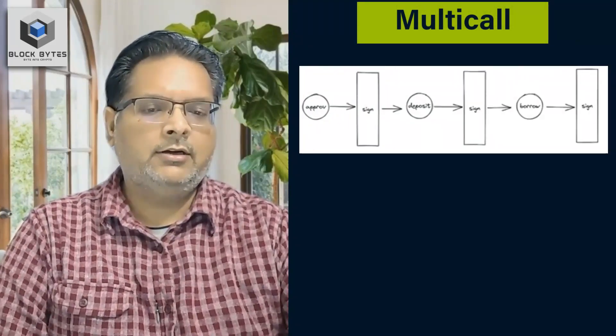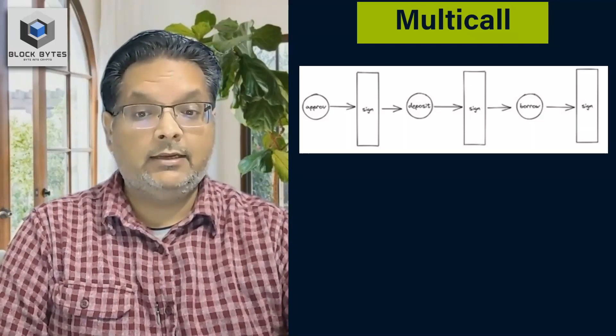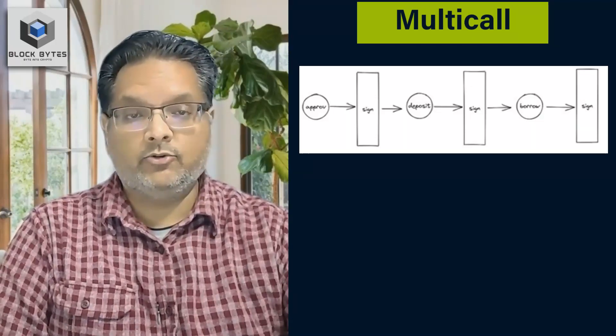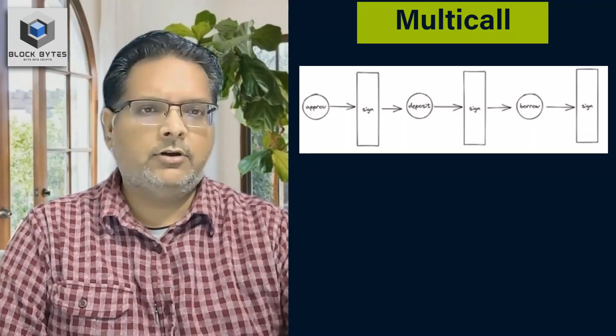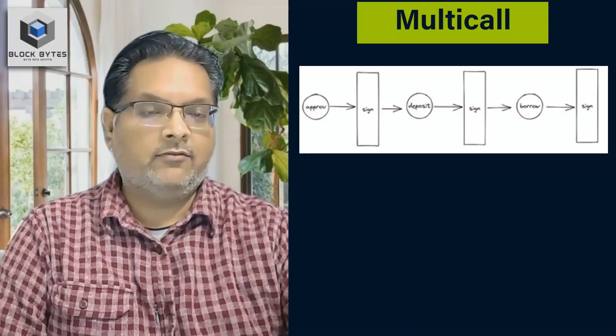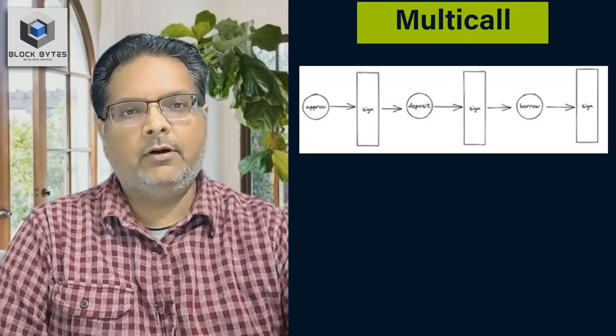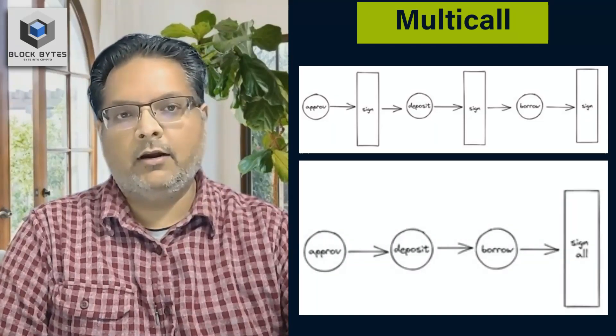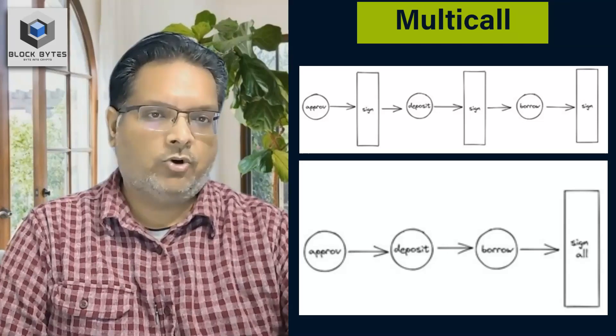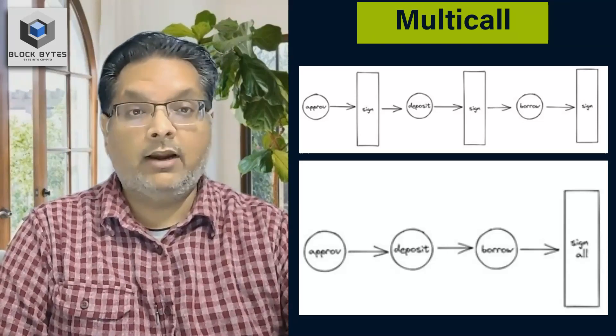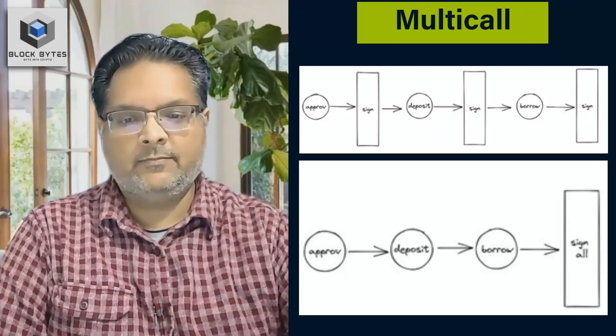Let's look at some of the critical advantages of account abstraction. First, Multicall. Because of the way Ethereum works, every change to the blockchain needs to be explicitly signed or approved by the user, which could quickly become time-consuming and frustrating. With account abstraction, multiple transactions can be bundled together and executed in one shot, leading to a one-tap user experience.